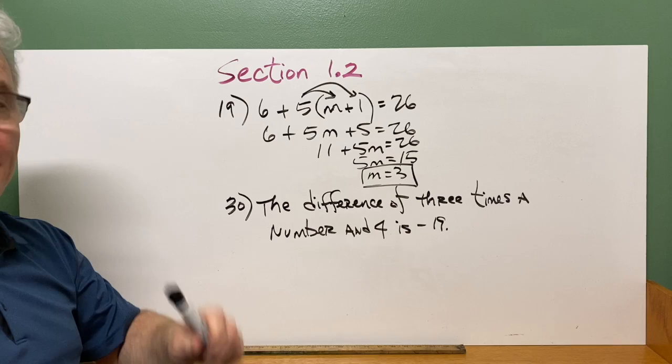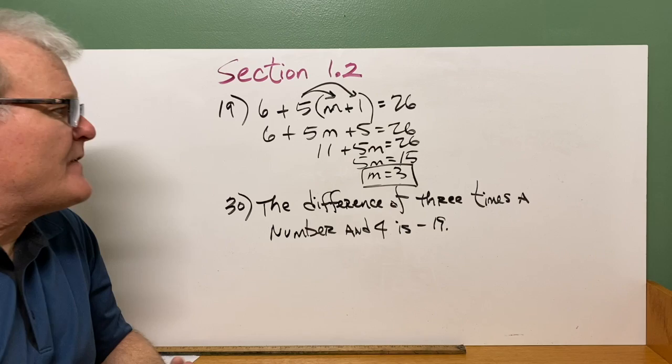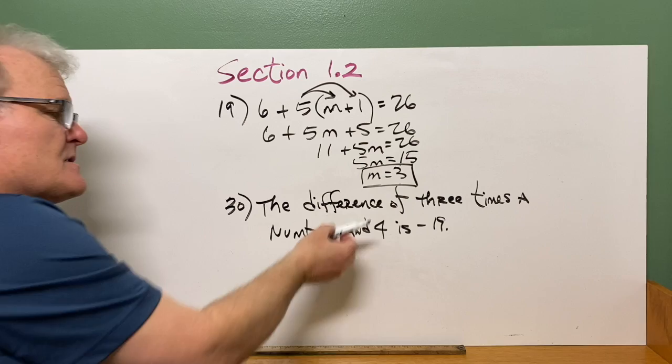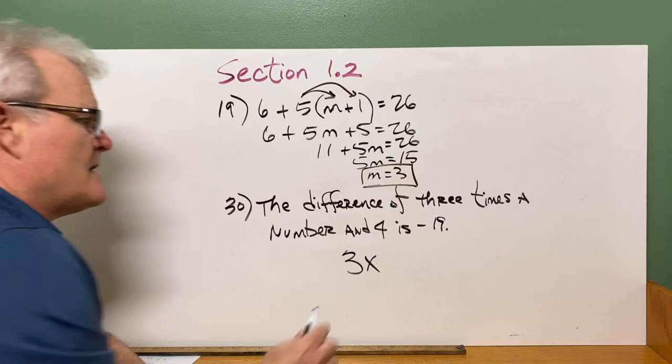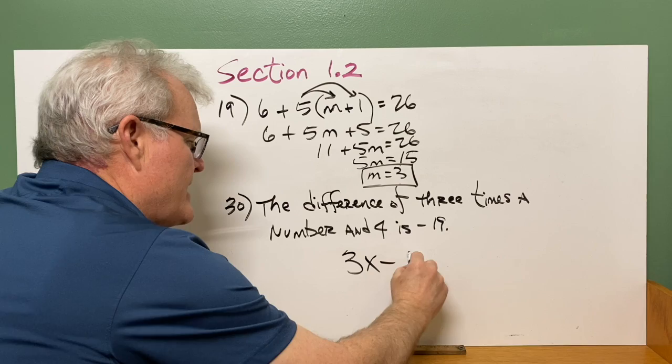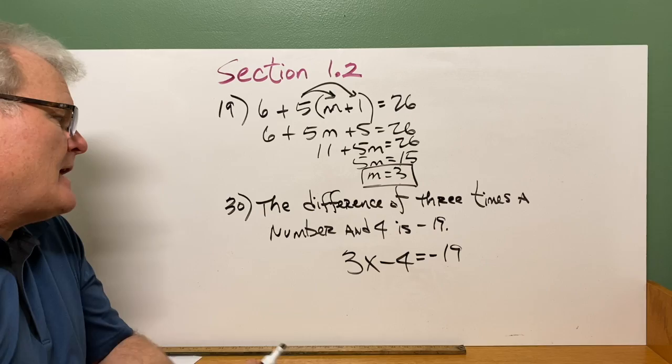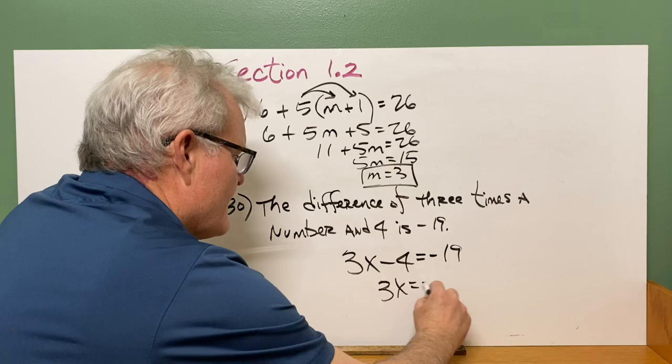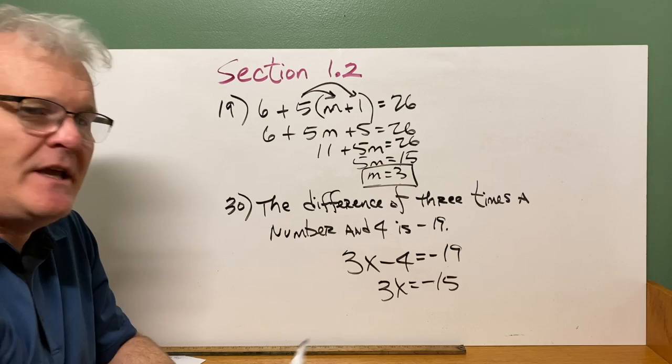Number 30, you have problems where you've got to change it into a math expression and then solve. This one says the difference of 3 times a number and 4 is negative 19. So difference means subtraction. So we're going to do 3 times some number. We're just going to call that number x. So 3 times x. We want to do the difference of that and 4. So 3x take away 4 is, means equals, negative 19. This is our equation for it. Then we need to solve this. So we're going to add 4 to each side. So we're going to get 3x is equal to negative 15. Remember, negative 19 add positive 4 is going to give you a negative 15. Finally, divide by 3. You're going to get x is negative 5.